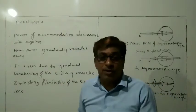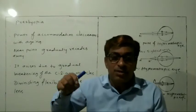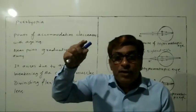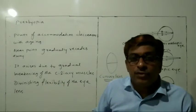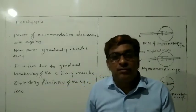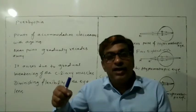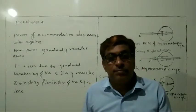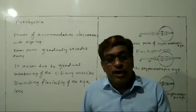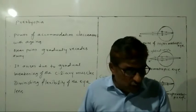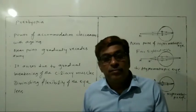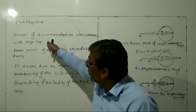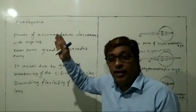How does presbyopia happen? After a certain age, the eye lens becomes less flexible — its elasticity diminishes. Due to the diminishing flexibility of the eye lens, the power of accommodation also decreases. The power of accommodation of the eye usually decreases with aging.